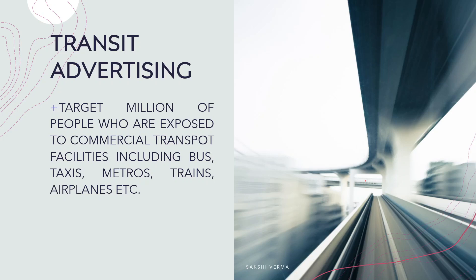Now we move on to the second part: transit advertising. Transit advertising means advertising through commercial transport services like bus, taxis, metro, train, planes, etc. You must have seen, while traveling in metro — outside and inside the metro — or while traveling in buses, the names of companies and pictures of products displayed. Sometimes it is shown inside buses as well. And then in planes and taxis also, you have different brands being promoted. That is transit advertising.